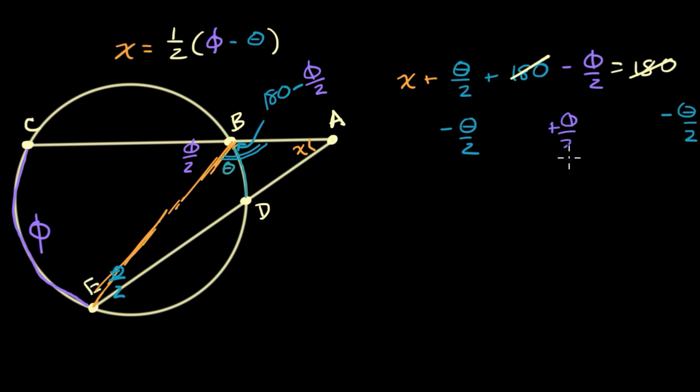So plus phi over two to both sides, and then I'm going to put a phi over two on that side, and then what I'm going to be left with is that X, all I have left on the left-hand side is an X.